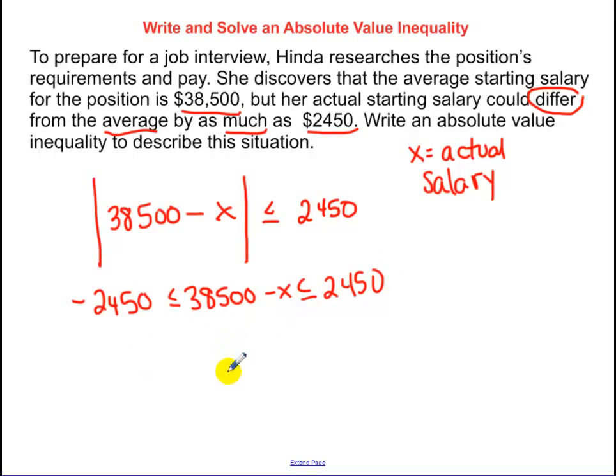I'm going to subtract $38,500. Keep that negative with the X. We're going to deal with that in a minute.